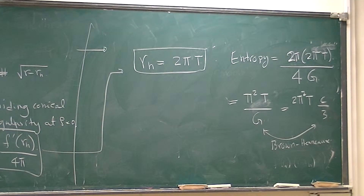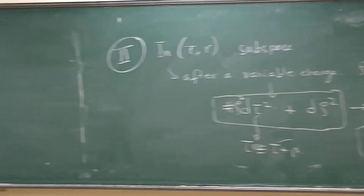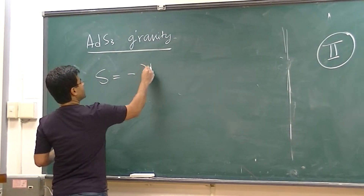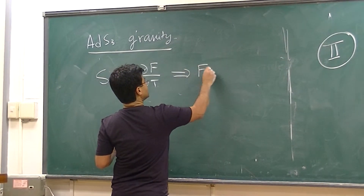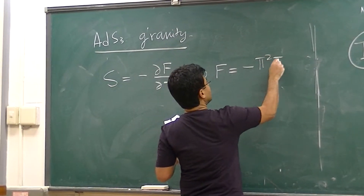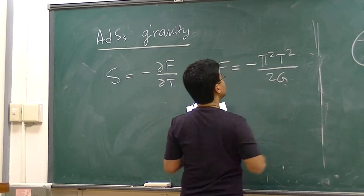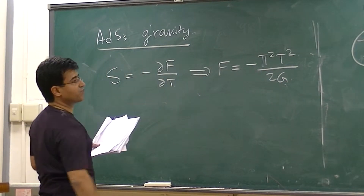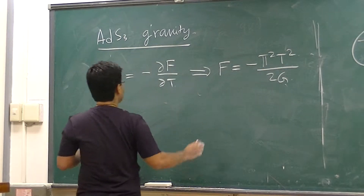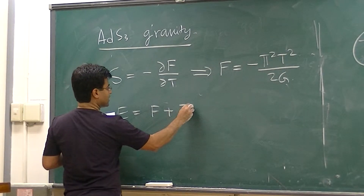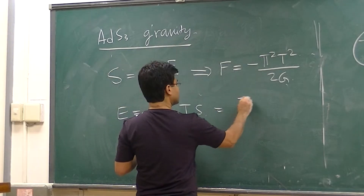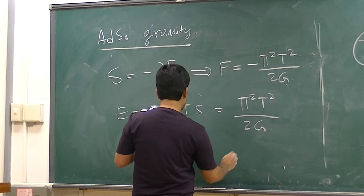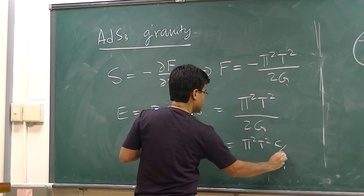We can do something more. Because we know that black holes have thermodynamics and we've calculated their entropy, we can calculate the free energy too. The entropy is given by the first derivative of the free energy with respect to temperature. We deduce that the free energy of this black hole is minus pi squared T squared divided by 2G. The energy or mass of the black hole is free energy plus T times entropy, so you find that the energy is pi squared T squared divided by 2G, which is pi squared T squared C divided by 3.